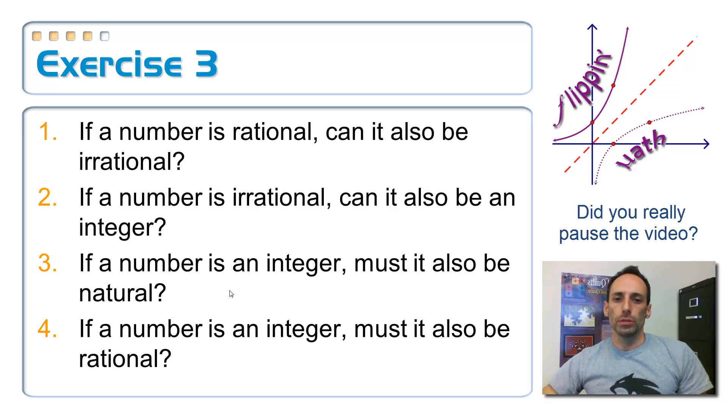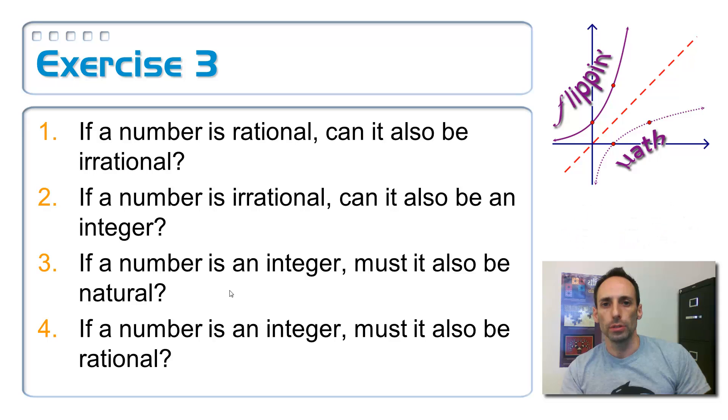So, let's see if you got these correct. If a number is rational, can it also be irrational? Can a number be both of those at the same time? No. Remember, these things are mutually exclusive. That is impossible. If one is rational, that means you could write as a fraction. That means it's not irrational. They're opposites. So, mutually exclusive.